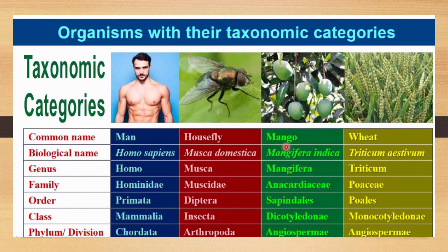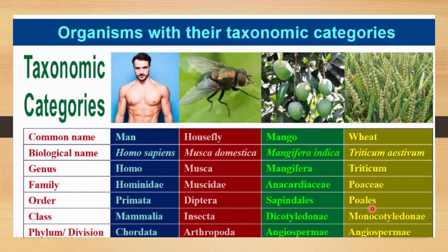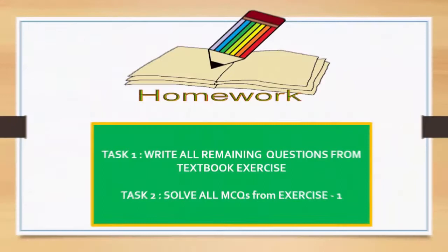For mango, a plant: scientific name Mangifera indica, genus Mangifera, species indica, family Anacardiaceae, order Sapindales, class Dicotyledonae, division Angiospermae — division, not phylum, because mango is a plant. For wheat, also a plant: scientific name Triticum aestivum, genus Triticum, species aestivum, family Poaceae, order Poales, class Monocotyledonae, division Angiospermae. These names must be remembered.